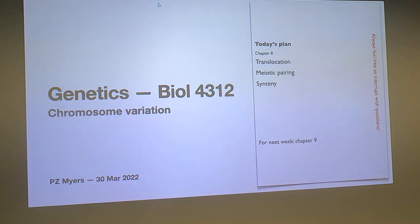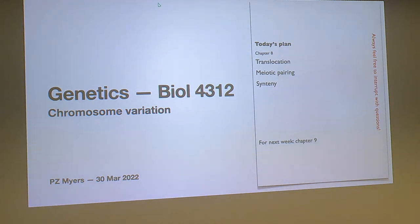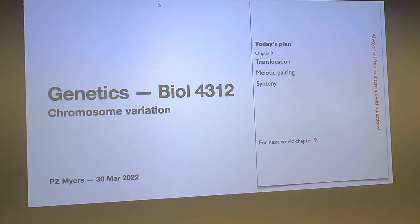Today we're going to finish up chapter eight and look at translocations and a few other details. For next week, start reading chapter nine, which covers extrachromosomal inheritance — mitochondrial inheritance, paternal inheritance — it's going to twist you all around. Last time we covered inversions, duplications, and deletions.